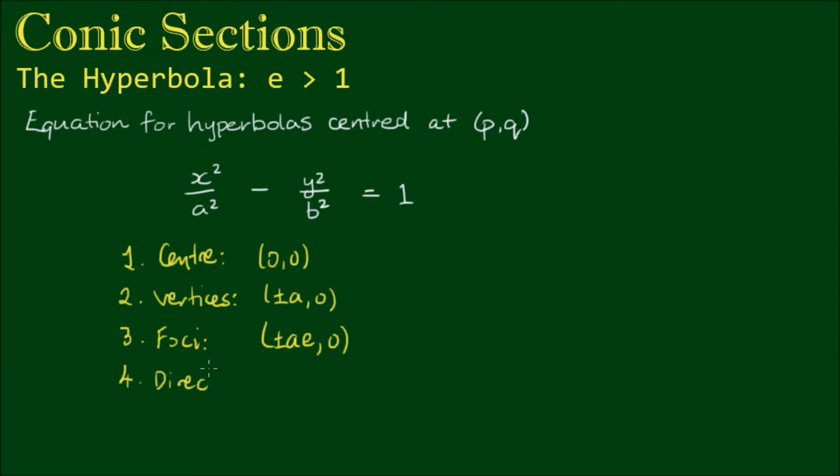The directrices are vertical lines with the equations x = ±a/e. And the asymptotes are diagonal lines with the equation y = ±(b/a)x. And we note that e is the eccentricity.